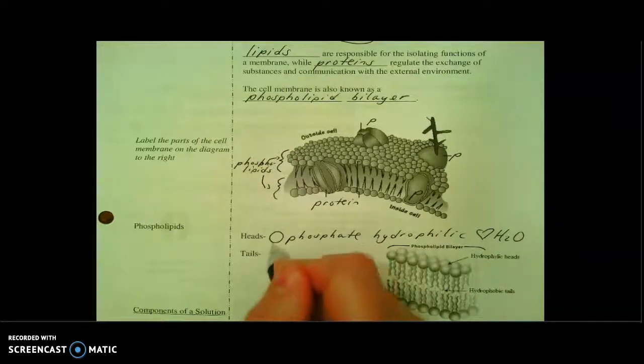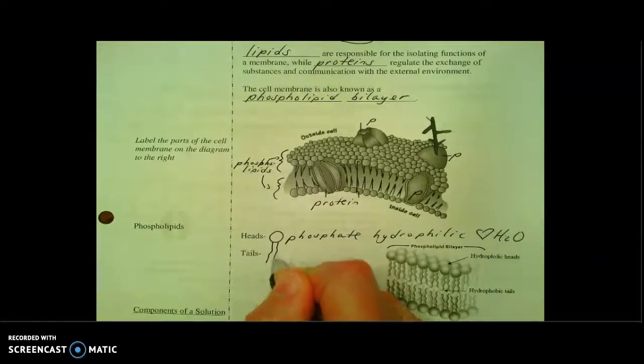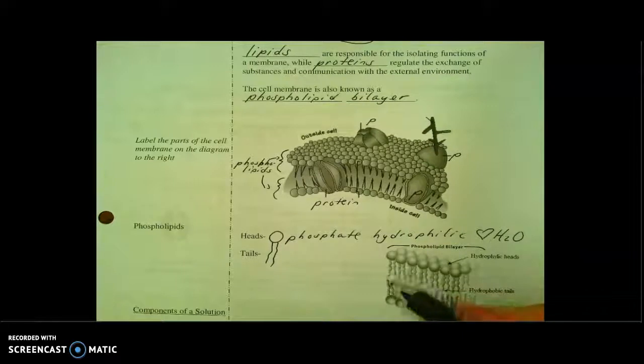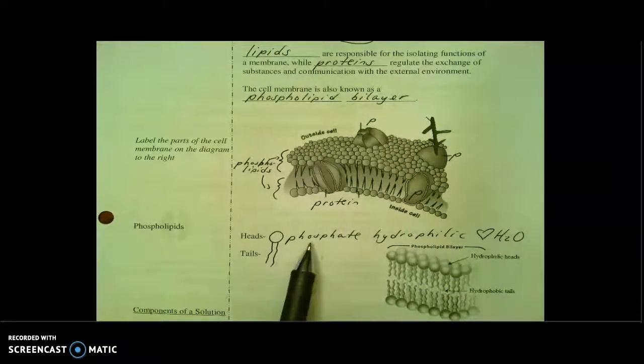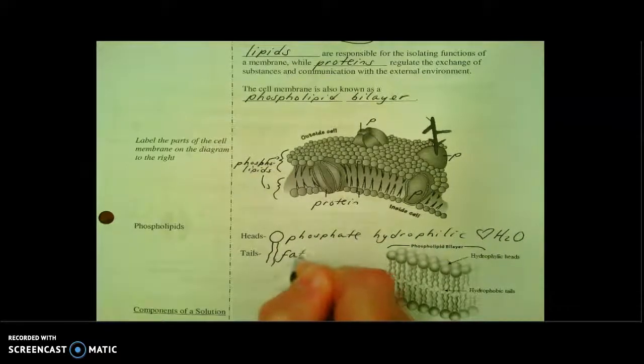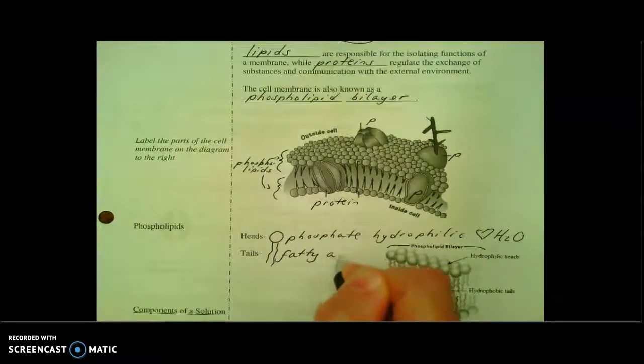On the other hand, the tails are going to be pictured in this diagram as sort of these long stringy things. And while the heads were made of phosphate, the tails are made of fatty acids.